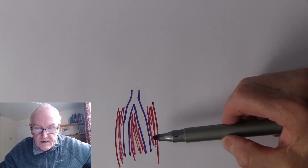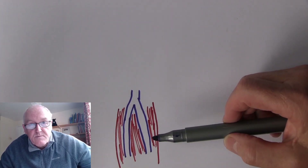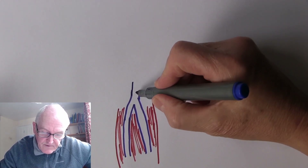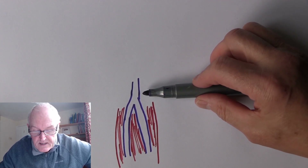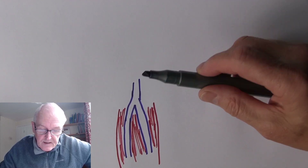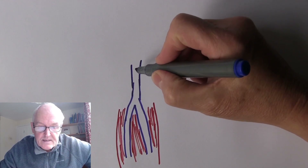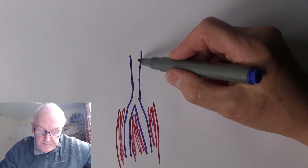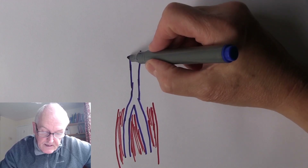The anterior and posterior tibial veins, as you would expect, run in front and behind the tibia. They join together at about the level of the knee, where they are called the popliteal vein. Other small vessels join this, but it keeps getting bigger. When it passes the femur it is called the femoral vein — so the popliteal vein becomes the femoral vein.